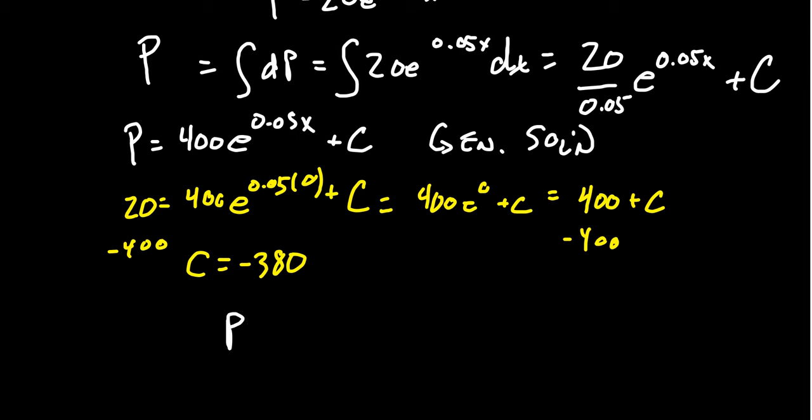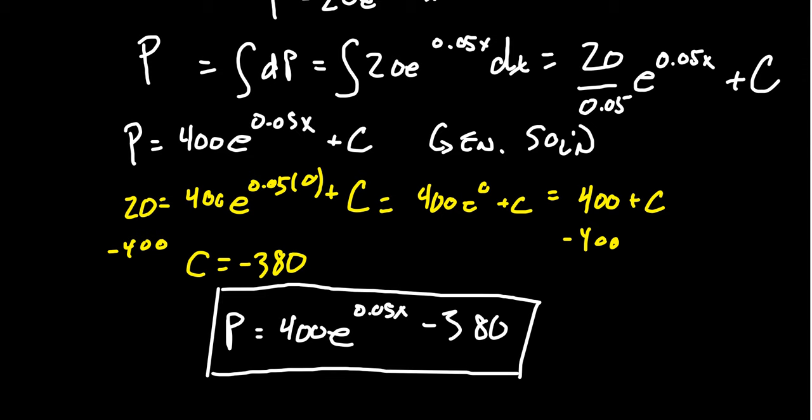We can write that our bird population equals 400e^(0.05x) - 380. After x many years, you could use this equation to predict how many birds will be in the population.